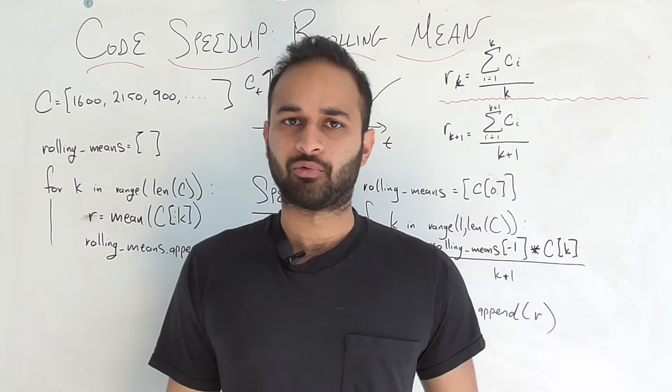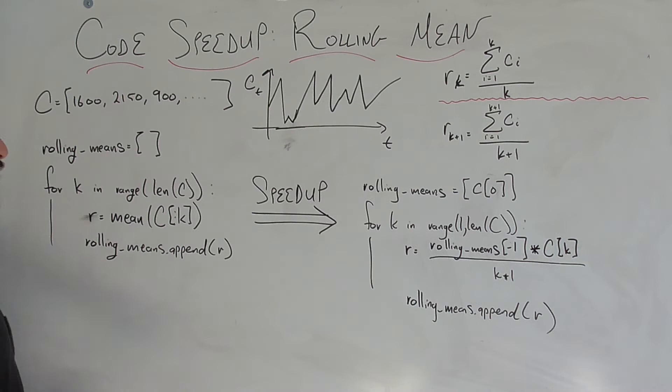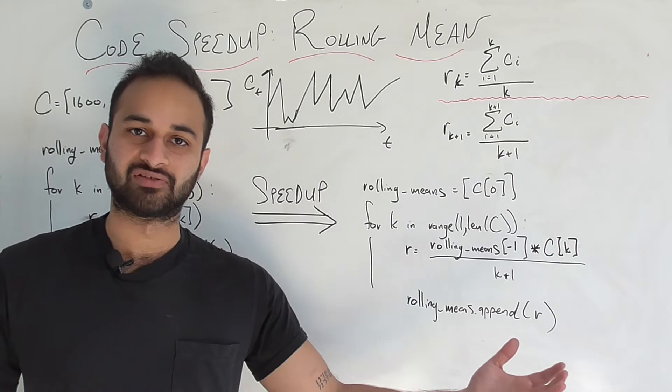Here's the setup and why you might want to care about rolling means in the first place. Let's say you have a list C, and each element of C is how many calories you ate every single day, let's say for a year. So it's 365 long, or longer for example.